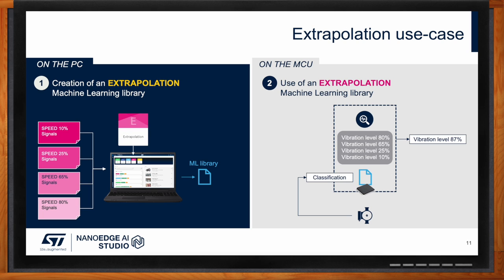The third algorithm class is extrapolation — essentially regression — where instead of predicting a class, you predict a continuous value. A concrete example: ST built a demo for a washing machine where you want to understand the load inside without a dedicated sensor. Using the current going to the motor control of the drum, the algorithm can tell you how much weight has been loaded — all running on the motor control without taking too much time or space away from that motor control solution. This class of algorithm is also static: trained before deployment, it remains fixed through the device's lifetime.